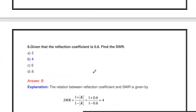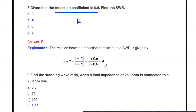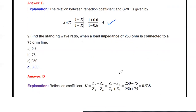The next question: given that the reflection coefficient k = 0.6, find the SWR. Using the formula SWR = (1 + |k|) / (1 − |k|) = (1 + 0.6) / (1 − 0.6) = 1.6 / 0.4 = 4. The answer is 4.